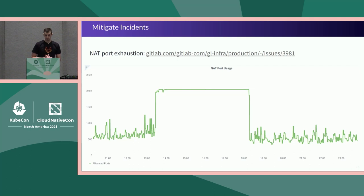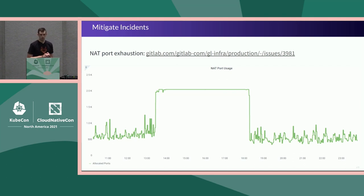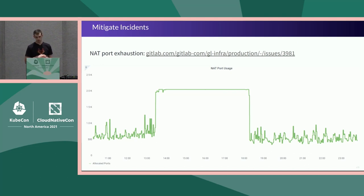Some bonus things we got from this configuration: one is a fun way to mitigate incidents. This chart shows our NAT port usage over time. When we first created additional clusters, we were deploying new code to all clusters at the same time. As we grew into Kubernetes and pushed more workloads into it, every deployment caused all Kubernetes nodes to pull down the new image simultaneously — resulting in NAT port exhaustion. To mitigate this, we simply modified our CI pipelines to deploy to one cluster at a time, giving our infrastructure engineers time to fix the problem, after which we reverted to parallel deployments.